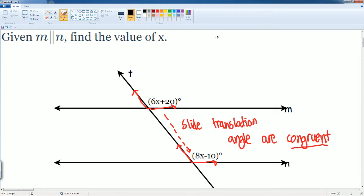Therefore we can set up the equation 6x plus 20 is equal to 8x minus 10 because they are congruent. They are the same. So now we can do our algebra and solve.